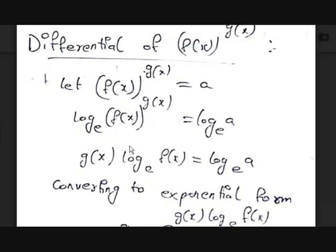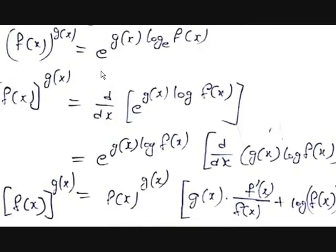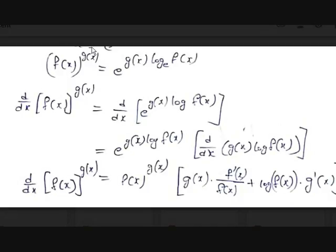Converting to exponential form: log a base e equals g(x)·log f(x), so a equals e to the power of g(x)·log f(x). Since a is nothing but f(x)^g(x), we get the key result: f(x)^g(x) = e^(g(x)·log f(x)).